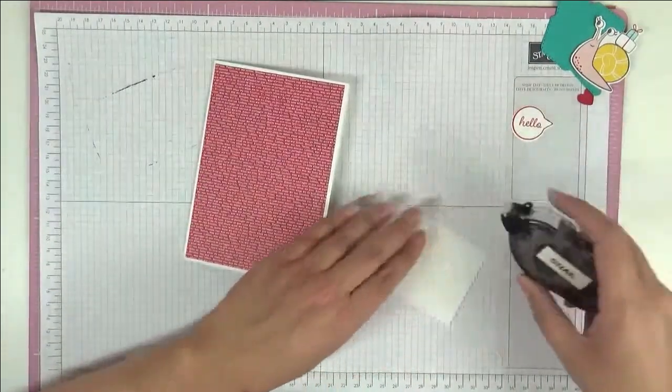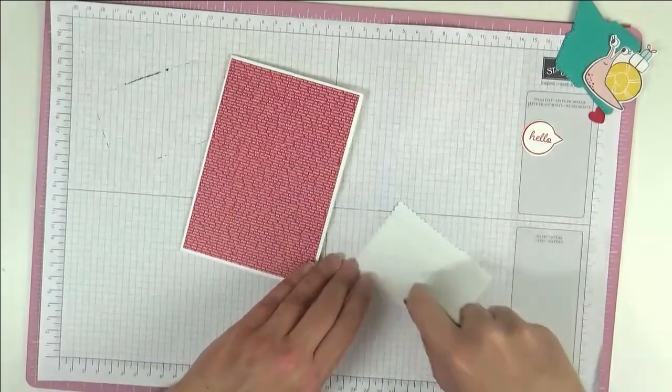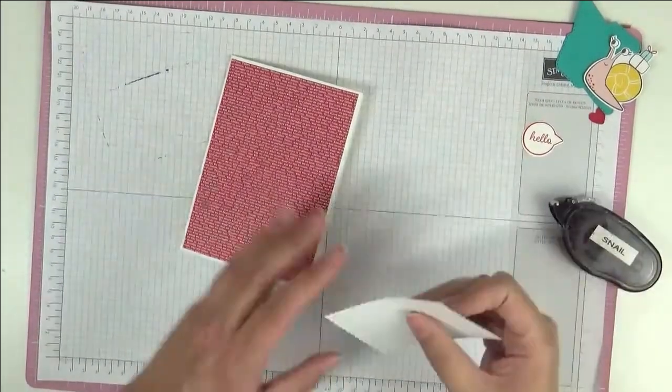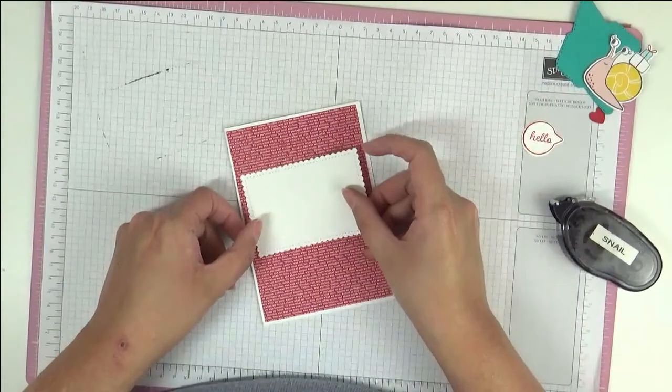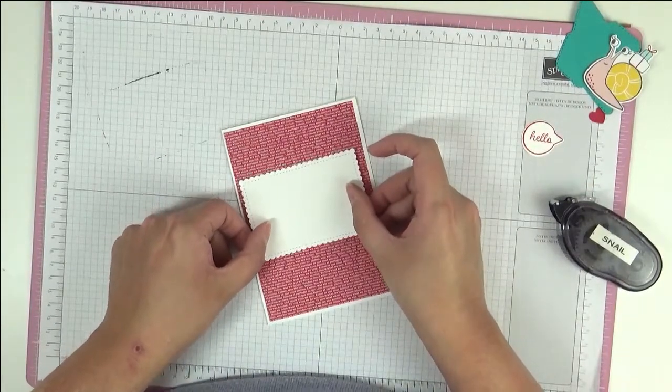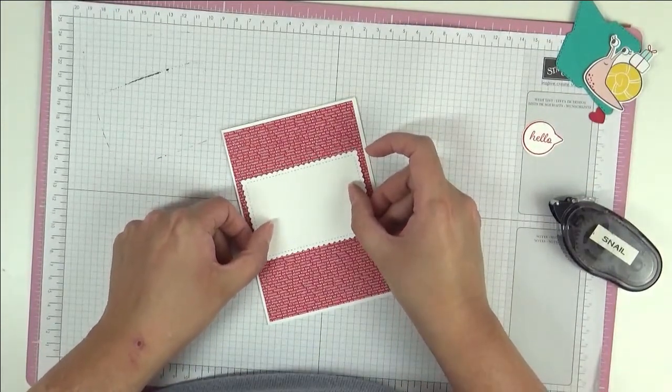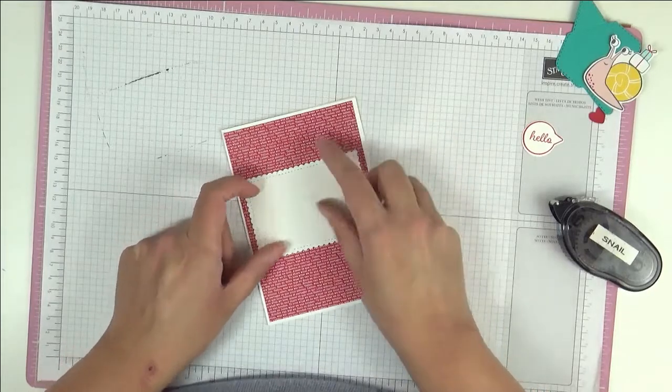So now we're going to stick our little frame down just with some snail as well. And the lines actually help you to get the straight which is really quite useful.